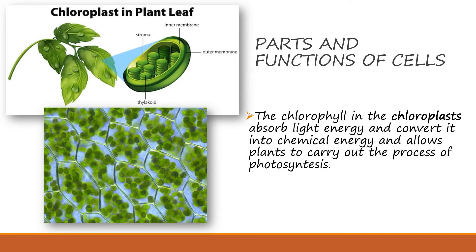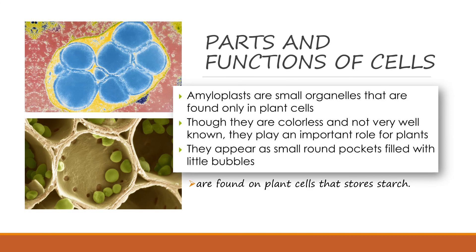We also have chloroplasts in plant cells. The chlorophyll in the chloroplast absorbs light energy and converts it into chemical energy, allowing plants to carry out the process of photosynthesis. Take note: only plant cells have chloroplasts; animal cells do not. We also have amyloplasts, small organelles found only in plants. Though they are colorless and not very well known, they play an important role for plants, appearing as small round pockets filled with little bubbles, found in plant cells that store starch.